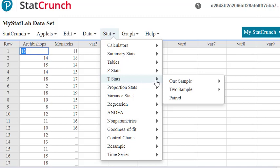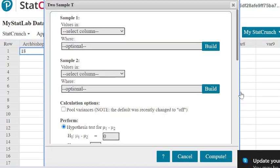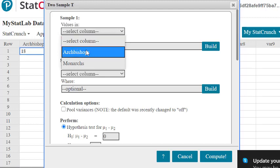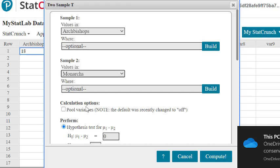We can find the statistics, but let's go ahead and run through the hypothesis test. This is going to be a t-statistic hypothesis test with two samples. And we actually have the original data set, so we'll select this one with data. The values for the first sample, that's going to be the archbishops. And for the second sample is for the monarchs.